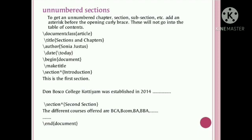To remove section numbering, we type the asterisk symbol — backslash section* with the star symbol. In the preamble we specify document class as 'article', then backslash title with the title name 'Sections and Chapters', author name, and today's date. Then backslash begin{document}, backslash maketitle. In the section commands, we add a star symbol: backslash section* — the asterisk removes the section number from the Introduction and from the second section.